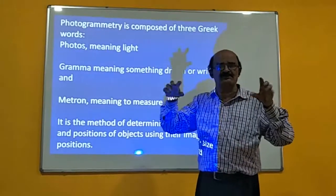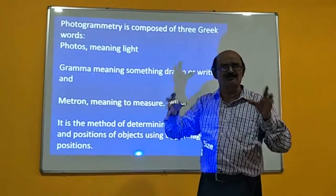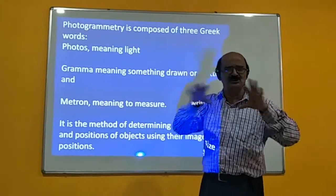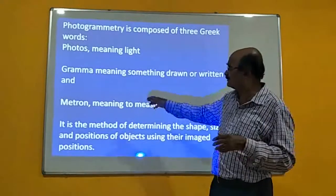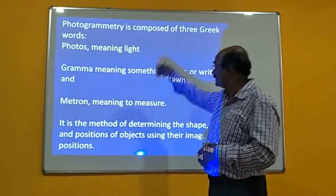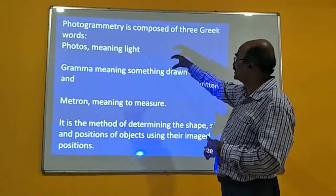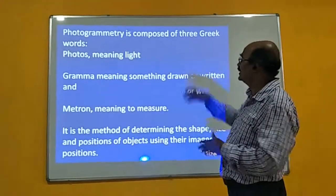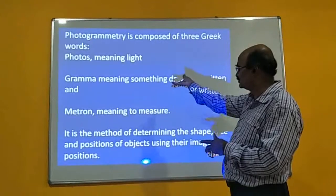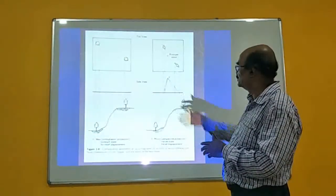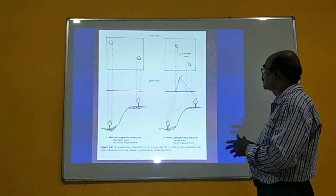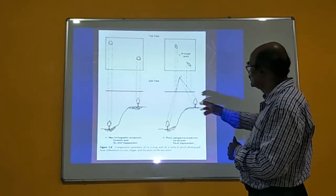We obtain photographs in the form of images — satellite images, aerial photographs — and at the end we are deriving quantitative information by making use of overlapped aerial photographs.